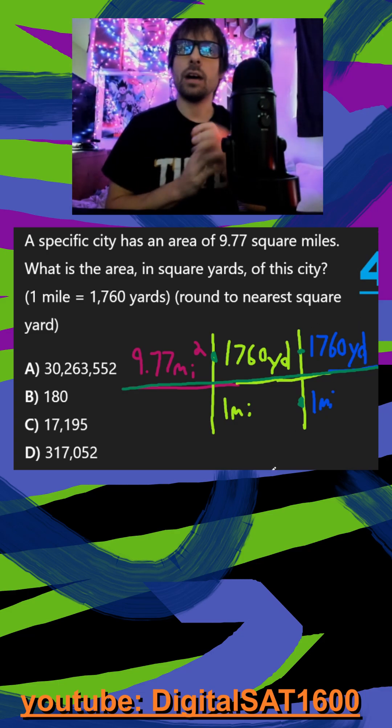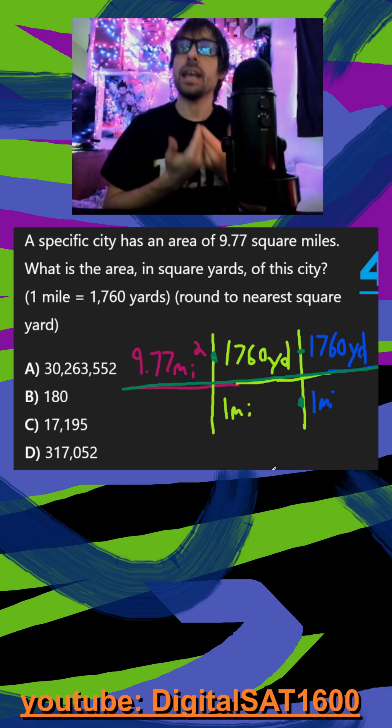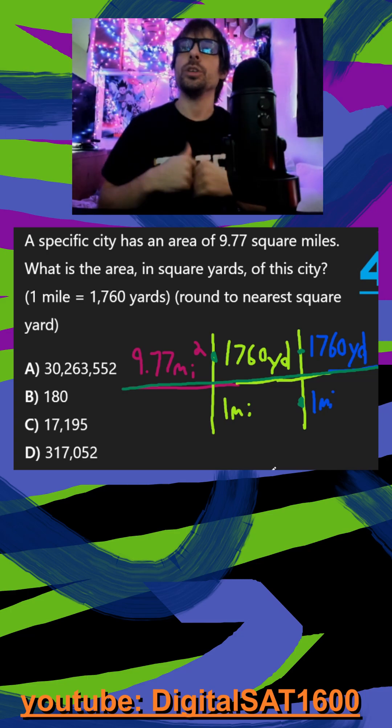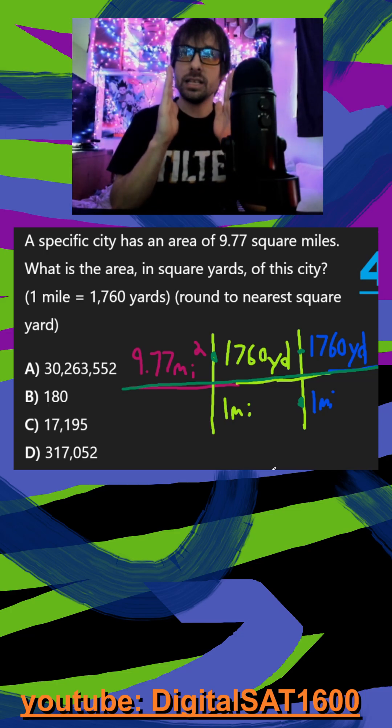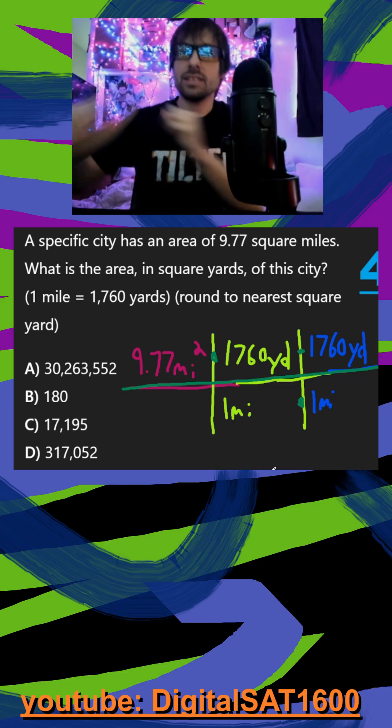So your goal to map these out is the units you start with. Diagonally, your goal is to cancel them out. So that's why I do miles and miles. And then vertically, your unit should be equal. One mile is equal to 1760 yards.